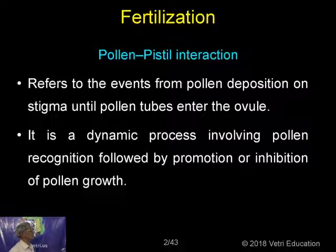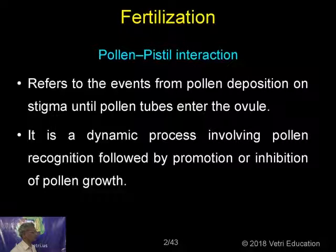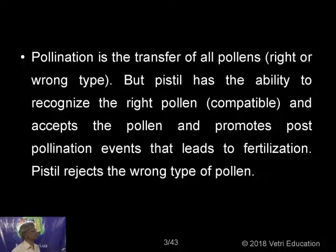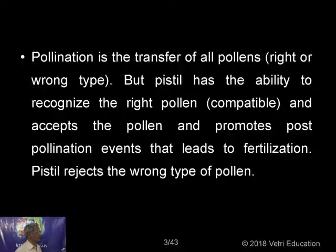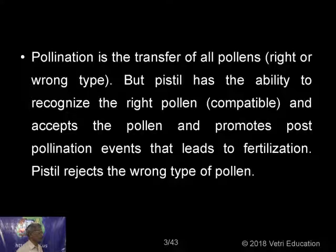What is fertilization? It refers to the events from pollen deposition on the stigma until pollen tubes enter the ovule. It is a dynamic process involving pollen recognition followed by promotion or inhibition of pollen growth. Pollination is the transfer of pollen, but the pistil has the ability to recognize the right pollen, accept it, and promote post-pollination events that lead to fertilization. Or sometimes the pistil may reject a pollen, which is called a wrong type of pollen.